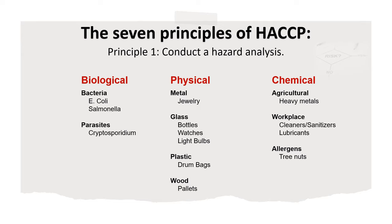Biological hazards can include microorganisms such as bacteria, viruses, yeasts, molds, and parasites. Physical hazards include objects that are hard or sharp such as glass, metal, plastic, stones, or wood. Physical hazards can lead to injuries such as choking, cuts, or broken teeth. Chemical hazards vary in the aspect of production they are related to. Some potential chemical hazards are the improper use of pesticides, chemicals used on processing equipment such as sanitizers or maintenance chemicals, or allergens. In this step you will need to make sure that you have the expertise to make an accurate evaluation of the hazards.